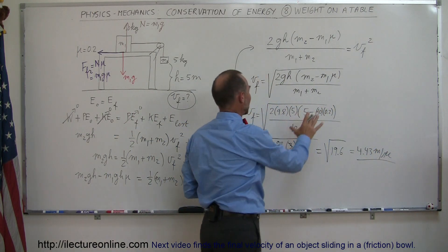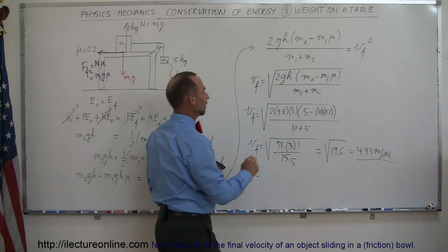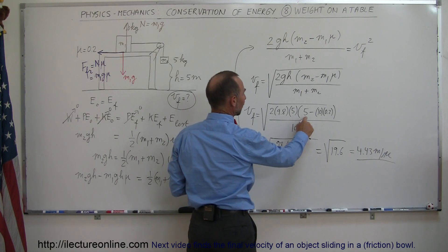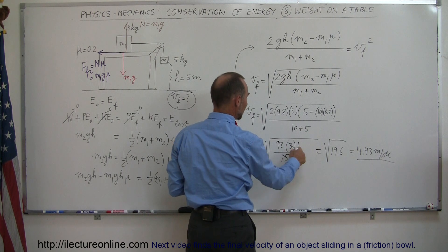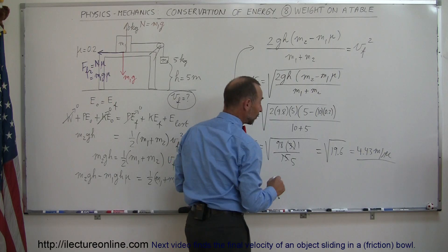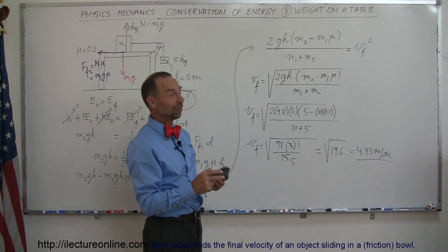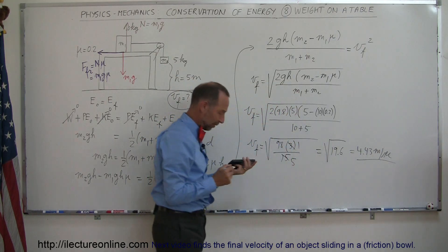I leave the units out because otherwise it gets really messy. It's easier to see it without units. Quick check to see if everything's right. So 10 times 9.8 is 98, 5 minus 2 is 3, and 10 + 5 is 15. 3 and 15 can be divided by 3, so that's 1 and 5. 5 goes into 98, well 5 goes into 100 20 times, 5 goes into 95 19 times, so it looks like 19.6 is correct, and there's the final answer.